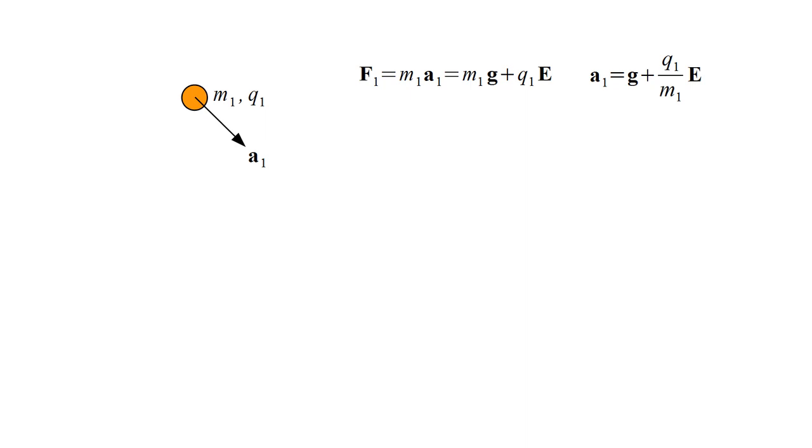Based on this alone, we cannot separate out the gravity and electric field contributions. Suppose a second particle, initially at rest at essentially the same place, has mass m-two and zero charge. And we measure its acceleration a-two. Since it has no charge, the force on it is due to gravity alone. So its acceleration is simply the gravitational field g. Taking the difference a-one minus a-two, the common g-terms cancel, leaving only the electric force on particle one. This gives us an unambiguous procedure for determining the electric field.